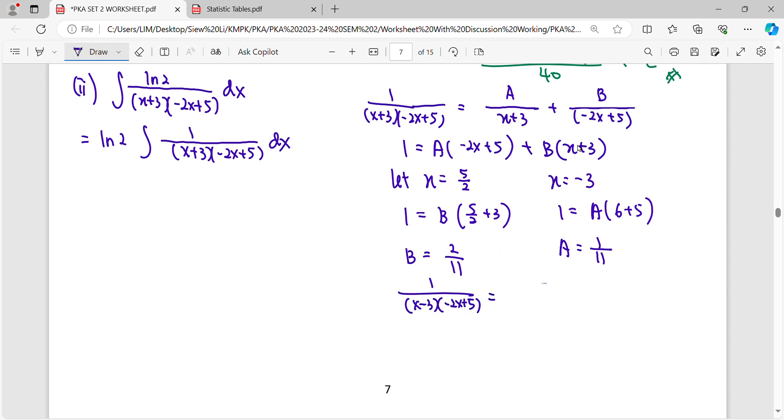So this fraction in partial fraction form will be (1/11)/(x+3) + (2/11)/(-2x+5).